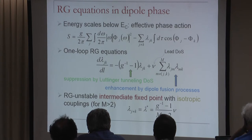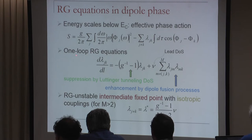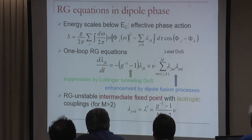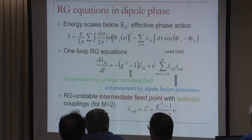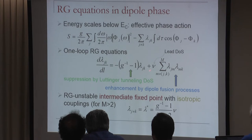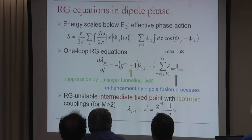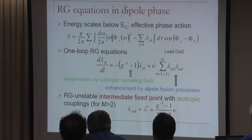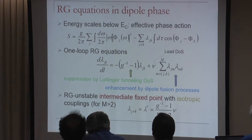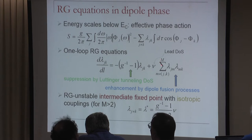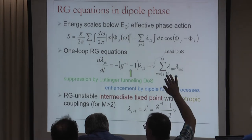The RG equations show the couplings lambda have one term that tends to decrease them and one term that tends to increase them, provided the number of Majoranas M is bigger than 2. This is because the summation index M must be different from J and K, which are also different from each other—possible only if you have more than two summation terms. The first term comes from Luttinger liquid physics and vanishes for non-interacting leads (G=1), while the second generically drives you to strong coupling.